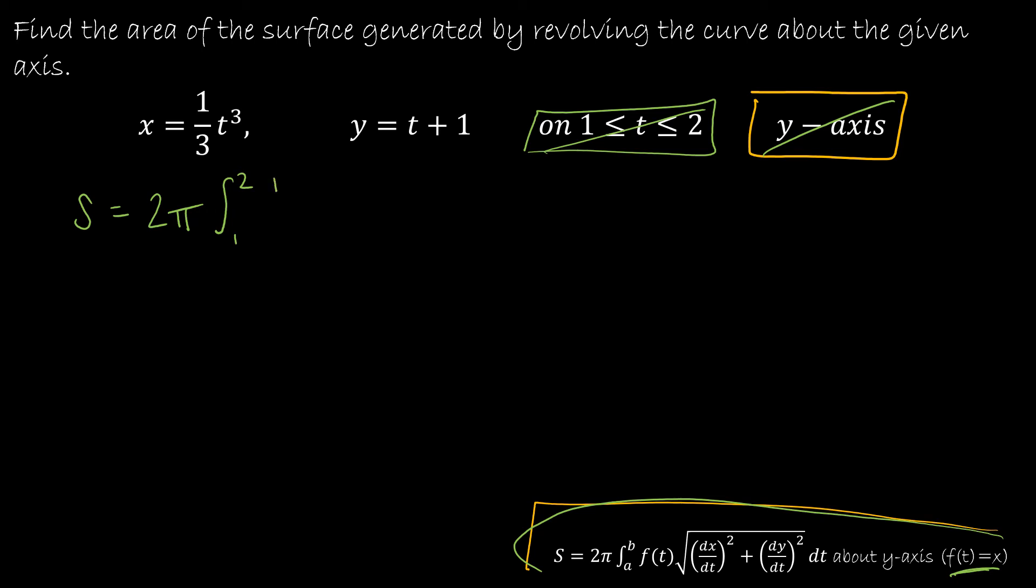So if we were integrating with respect to the x-axis, then I would be using y instead of x. But in this case, I've got x, which is (1/3)t³. And then I'm going to take the square root of (dx/dt)². So essentially, what's the derivative of (1/3)t³? It's t².